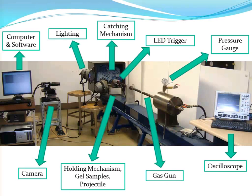Probably the last week of that summer is when we finally were able to run experiments and do them pretty quickly. We have the gas gun, a scope to take measurements, a pressure gauge, and a trigger to show when the projectile is coming through.